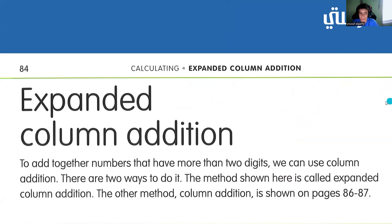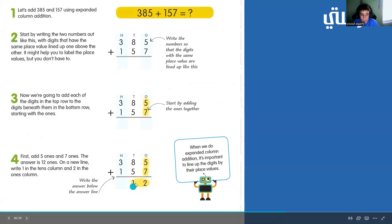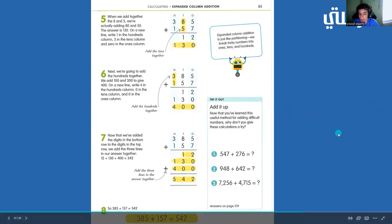Now we have expanded column addition. Here we have the equation 385 plus 157. We start off by adding 5 and 7: 5 plus 7 equals 12, so we write 12 down. Now we add 8 plus 5, but since this is in the tens place, it's actually 80 plus 50, which equals 130. Now we add 3 plus 1, but it's actually 300 plus 100, which equals 400. So, 12 plus 130 plus 400 equals 542. Therefore, 385 plus 157 equals 542.